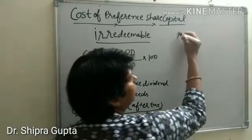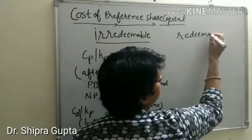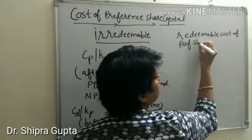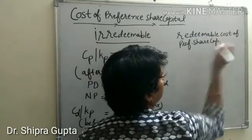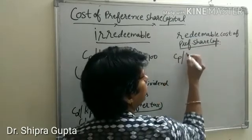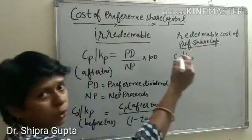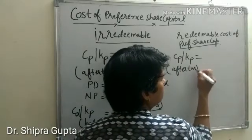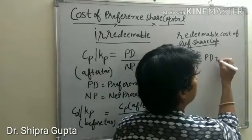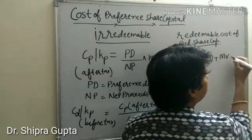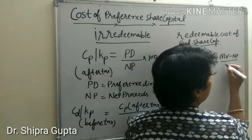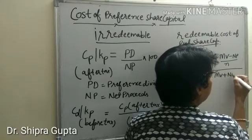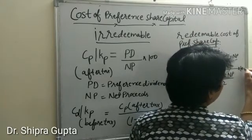Now we will calculate the redeemable cost of preference share capital. So Cp, or Kp, in the redeemable case, maturity time will be given. It is again first calculated after tax. The formula is: Pd plus maturity value minus net proceeds divided by n, all upon maturity value plus net proceeds divided by 2, multiplied by 100.